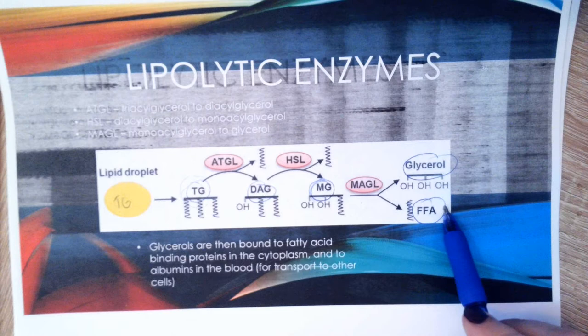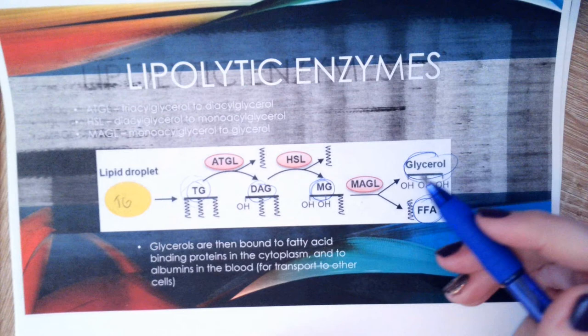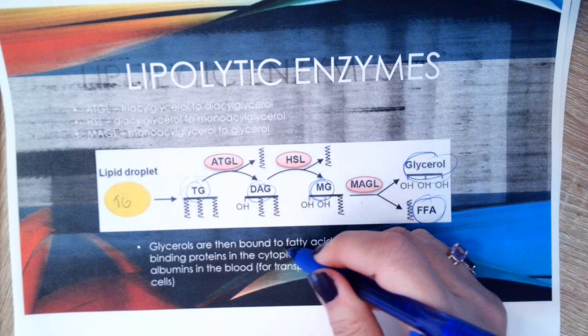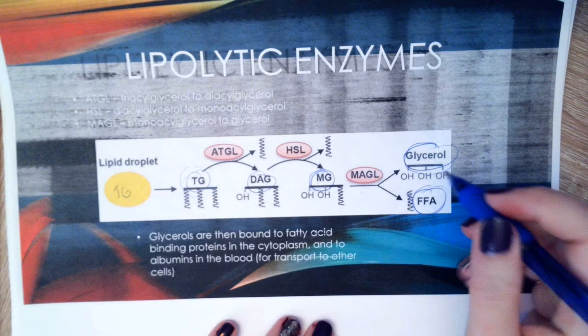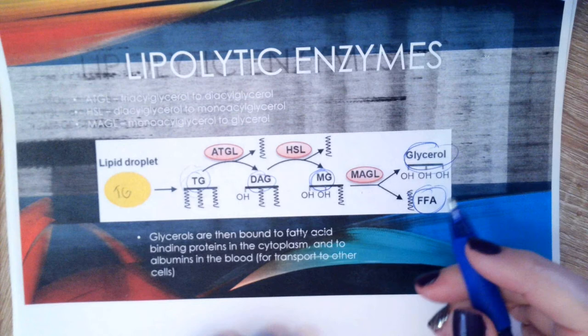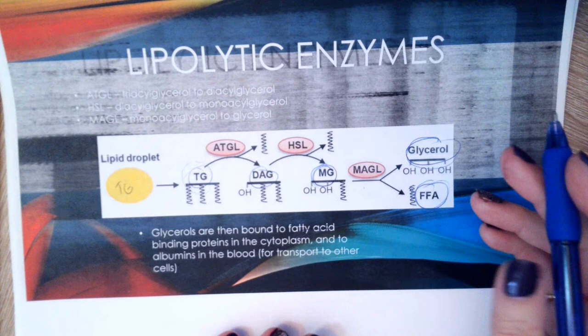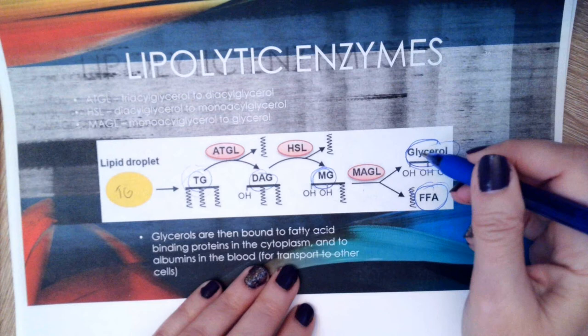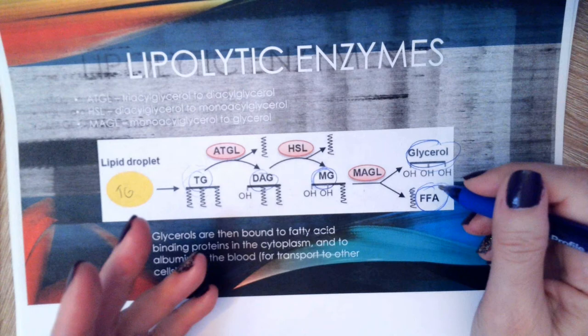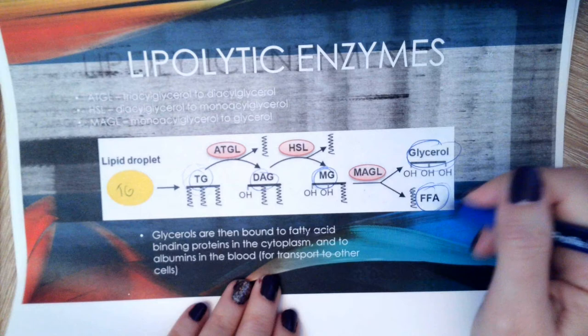The free fatty acids can then go into the blood. They are first bound to fatty acid binding proteins in the cytoplasm of the adipocyte, then diffuse into the blood where they are taken up by albumins floating in the blood. Albumins act as transport proteins, escorting the fatty acids to other cells that are in the non-fed state and need them for energy.